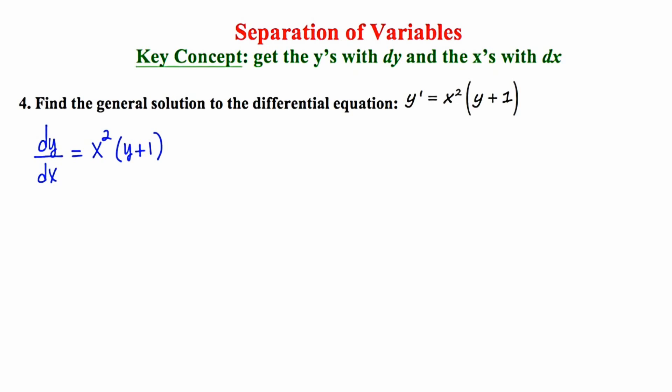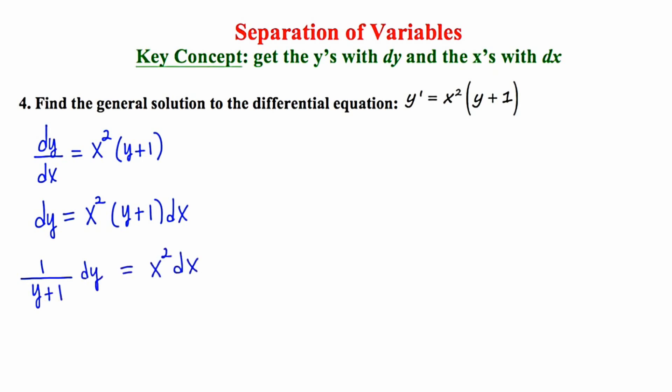In my next step I'm going to cross multiply. I'm going to keep my key concept in mind, which is to get all the y's with dy and all the x's with dx. To do this I'm going to need to divide both sides by y plus one. Now I'm going to integrate both sides. On the left side we have a fraction where the numerator is the derivative of the denominator, so this is going to be a natural log situation.